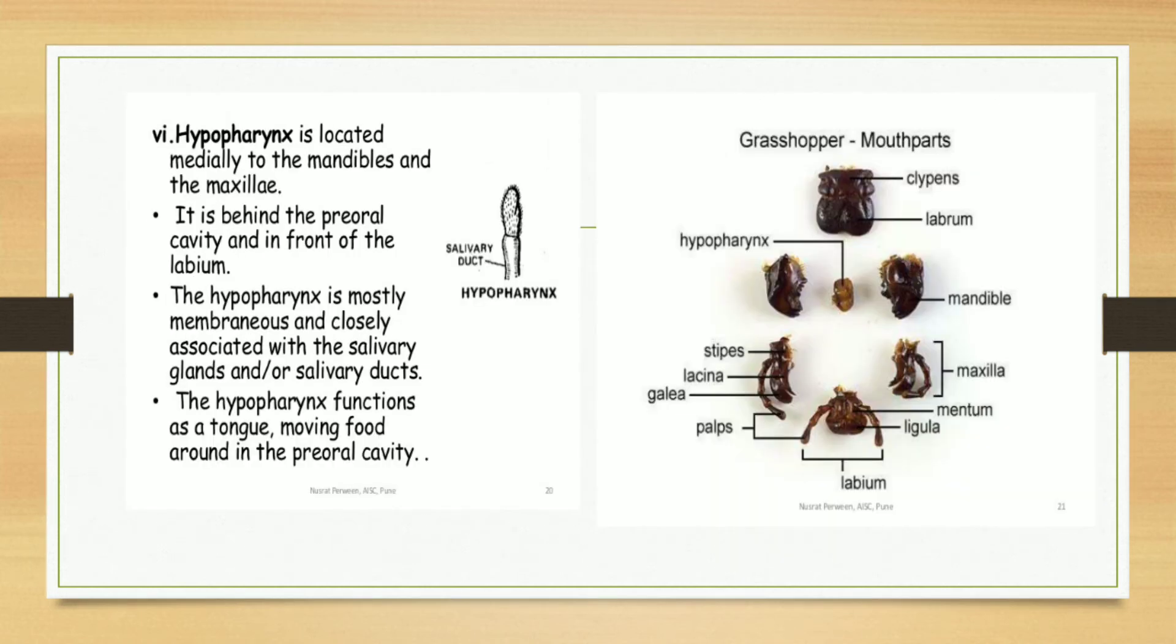Then hypopharynx. Hypopharynx is located medially to the mandibles and maxillae. It is behind the preoral cavity and in front of the labium. The hypopharynx is mostly membranous and closely associated with the salivary glands or salivary ducts. The hypopharynx functions as a tongue, moving food around in the preoral cavity. This picture shows the mouthparts of grasshopper.